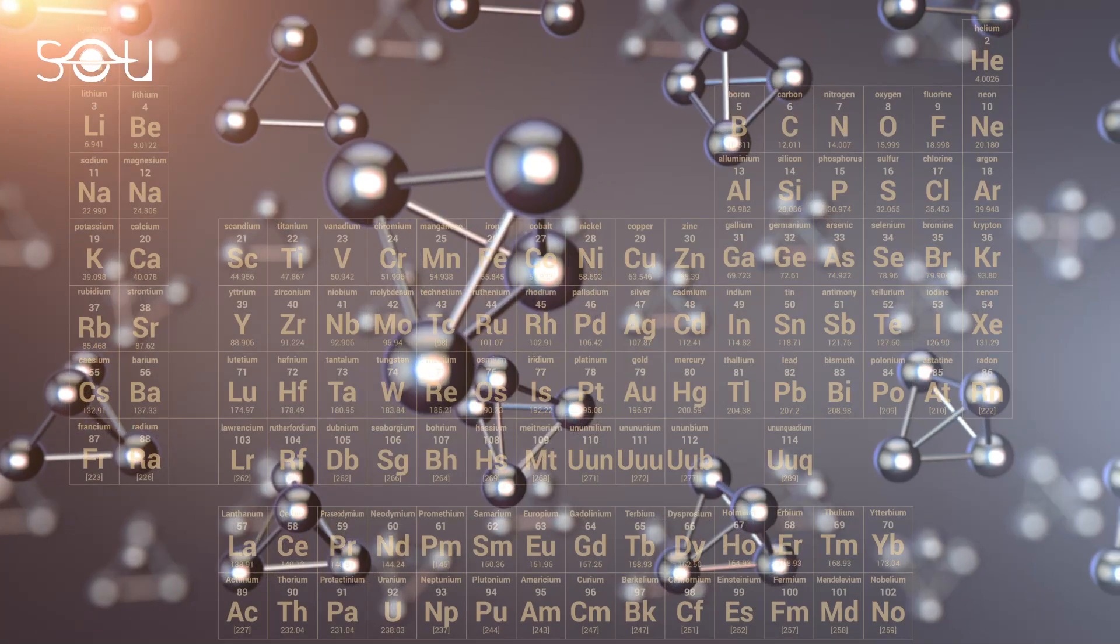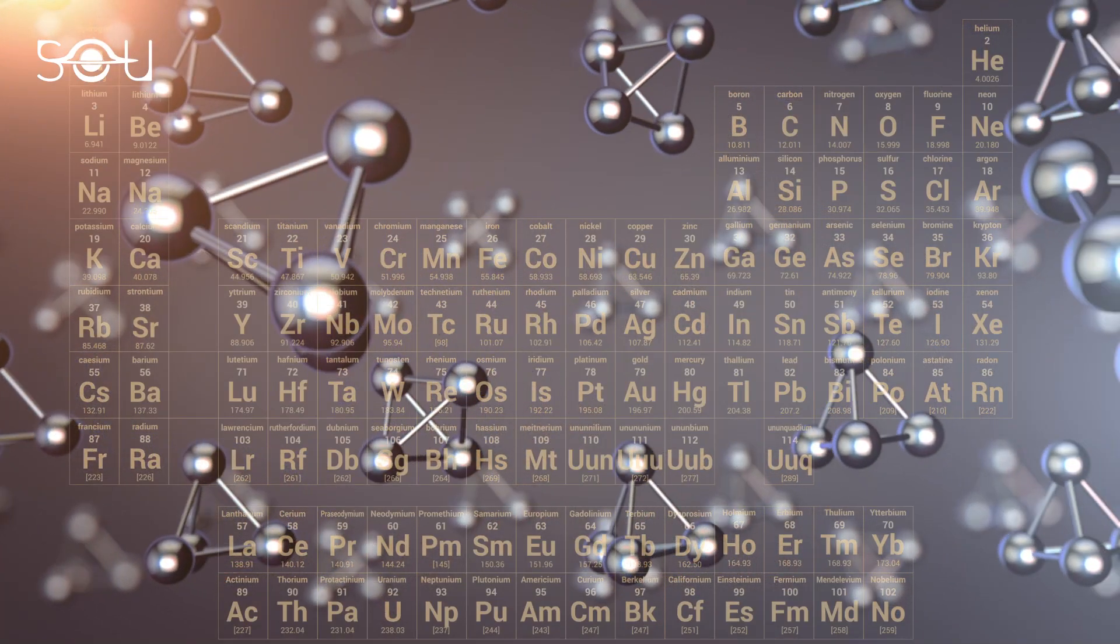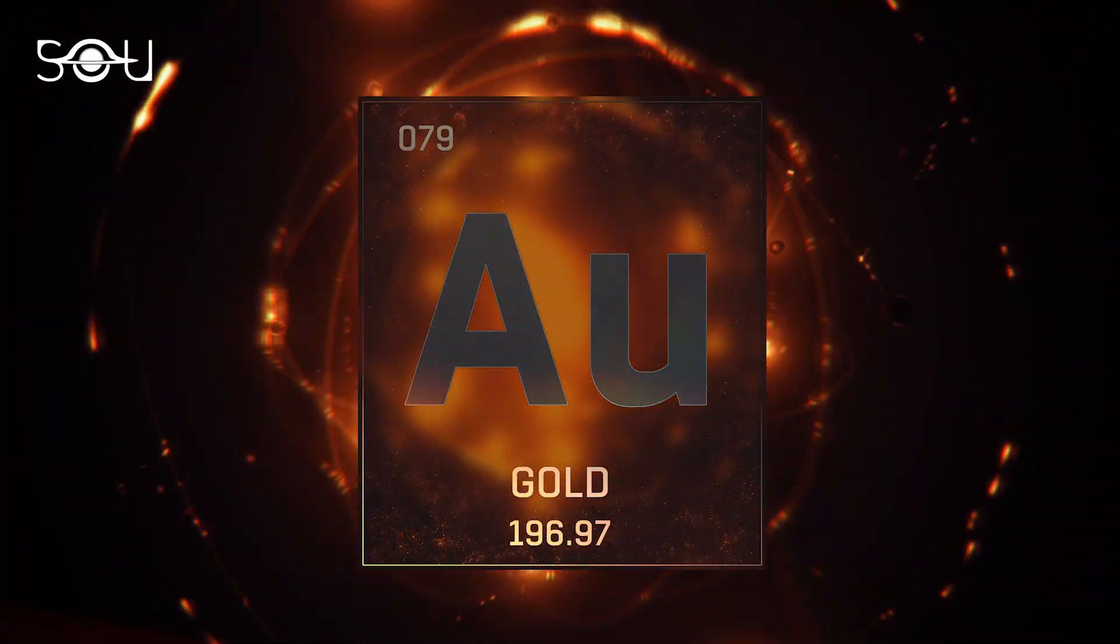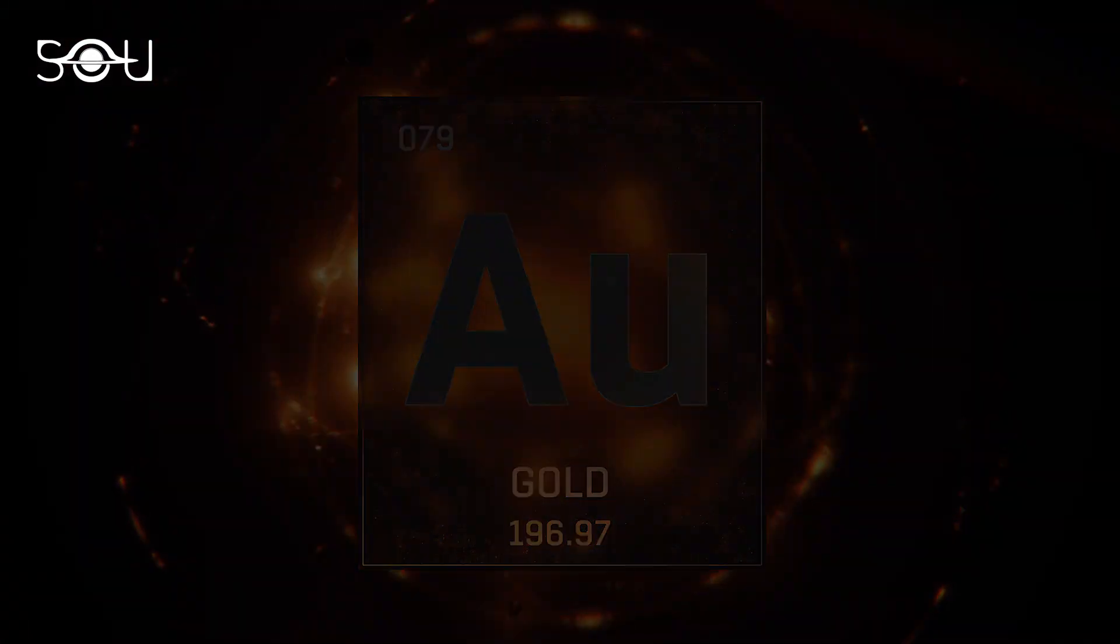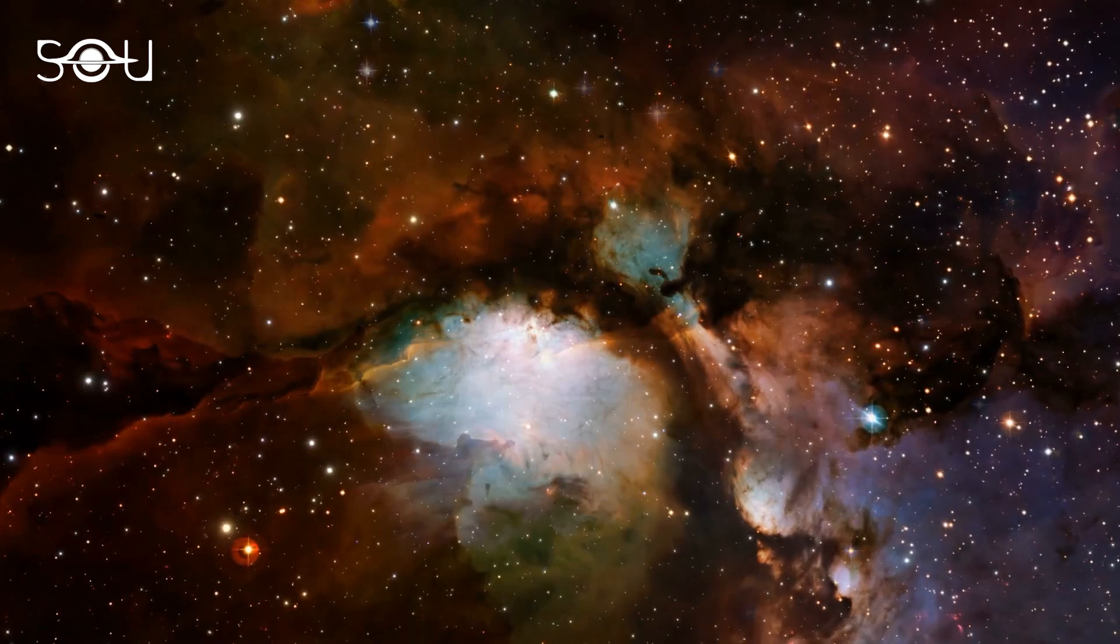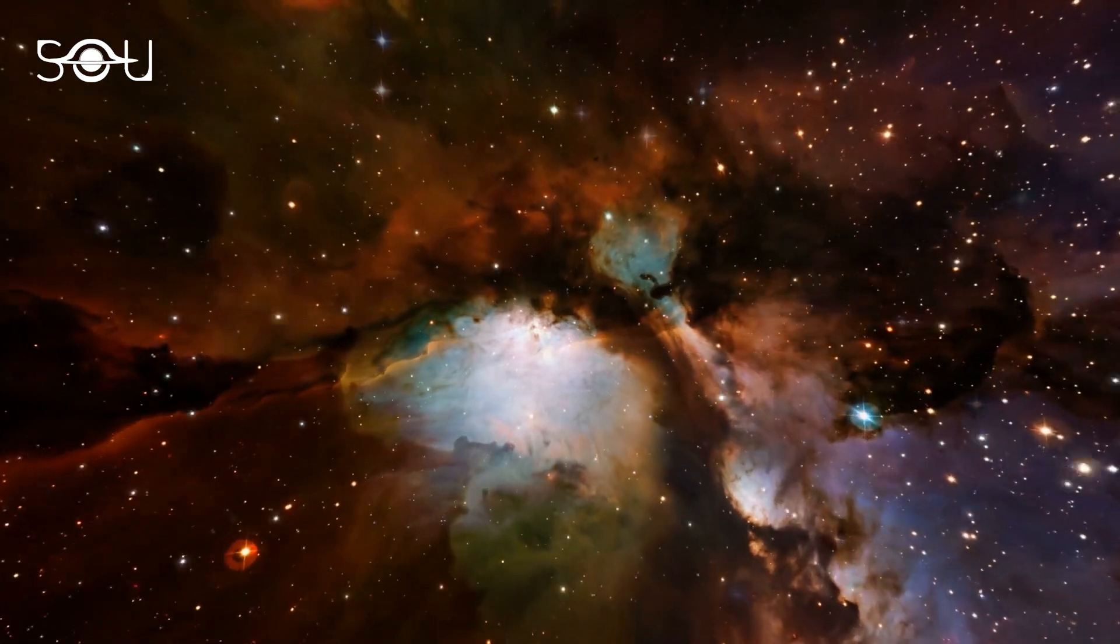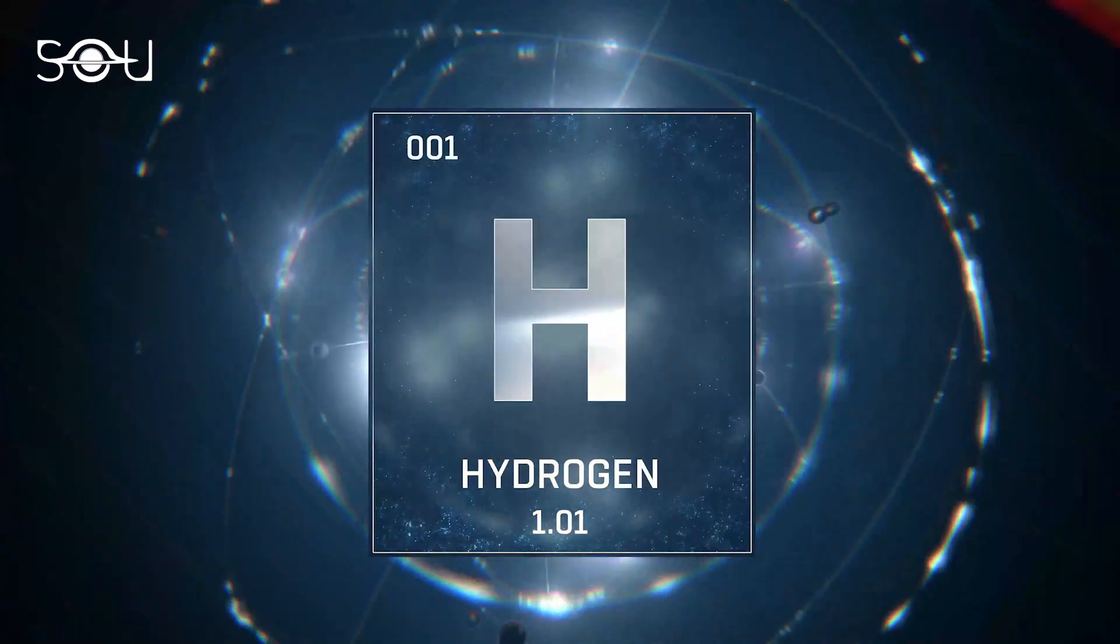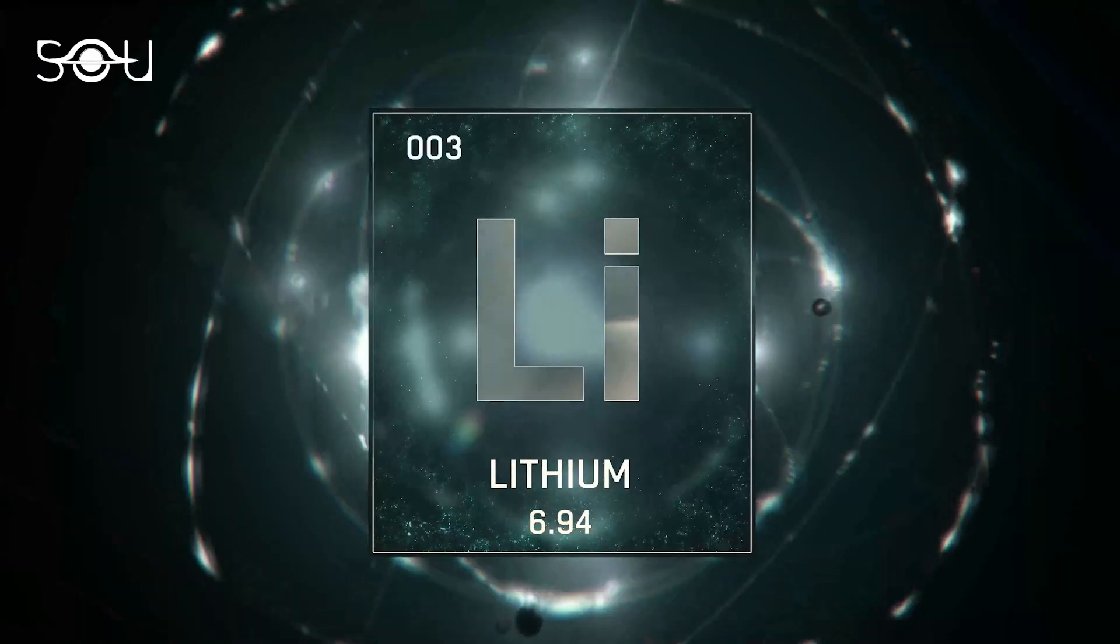For that, we first need to visit the periodic table of elements. Gold has an atomic number of 79, which means it's a heavy element. To understand the origin of gold, we need to go way back in time to the beginning of the universe. Soon after the Big Bang, only three elements were created: hydrogen, helium, and a trace amount of lithium.